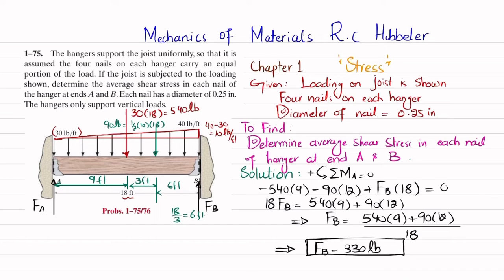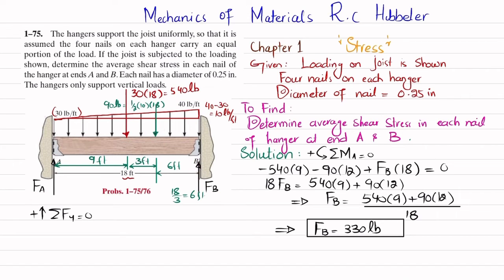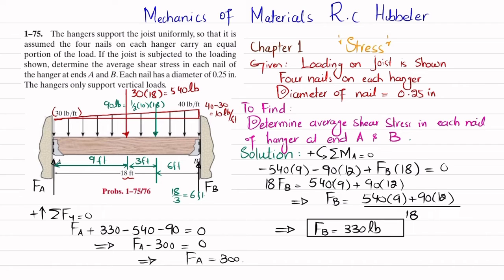Now we find F_A using the equation that the sum of all forces along the y-direction equals zero, with upward forces taken as positive. The two reaction forces are upward and the two distributed load resultants are downward. So: F_A + F_B − 540 − 90 = 0. Substituting F_B = 330 pounds gives F_A = 300 pounds.